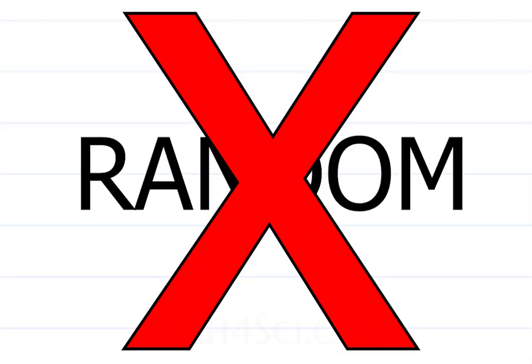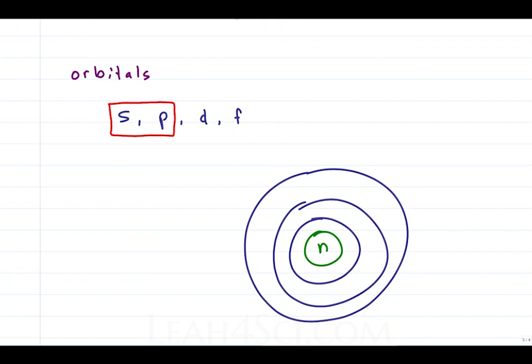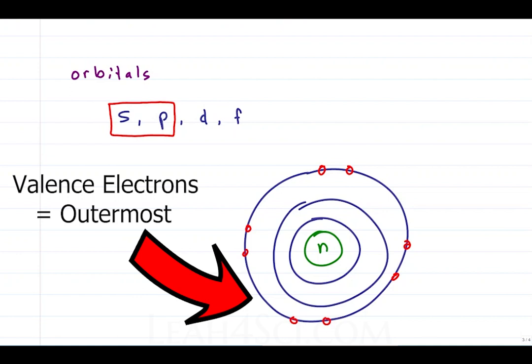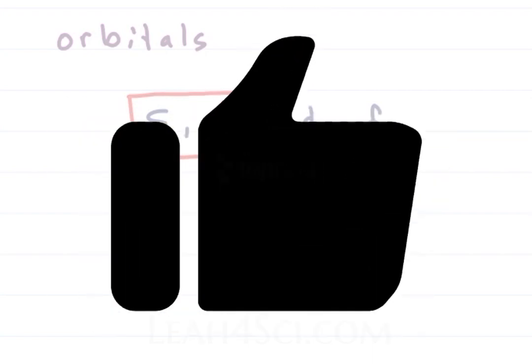Electron location is not random. Instead they exist in specific orbitals, which in general chemistry you learned S, P, D, and F. Luckily, in organic chemistry, we're only looking at the S and P orbital. Since electrons live in the different shells, only the outermost, or valence electrons, are available to interact with other atoms, and only those electrons are going to participate in organic chemistry reactions. Those valence electrons are located in the S and P orbitals.